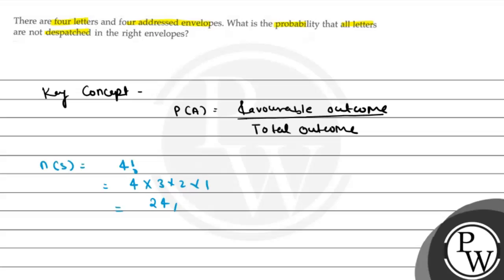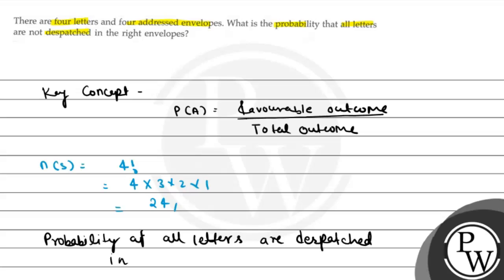Now we have to find the probability that all letters are not dispatched in the right envelopes. To do this, we first find the probability that all letters are dispatched at the right envelopes. So we need to find the probability that all letters are correctly placed in the right envelope.